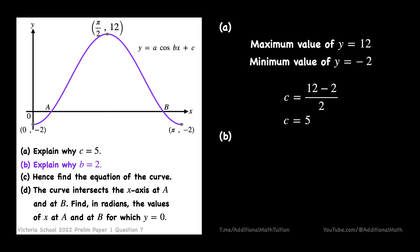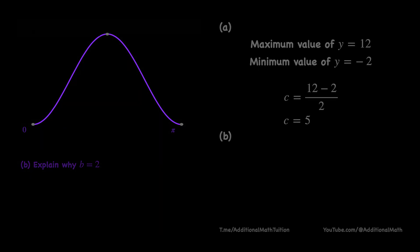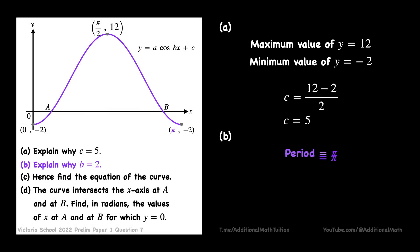Next, to find b, the number of cycles of the cosine graph for x between 0 to 2π inclusive, we look at the period of this cosine curve, which is π. Then, we set 2π/b = π. Thus, b is found to be 2.